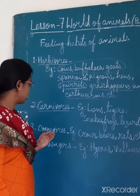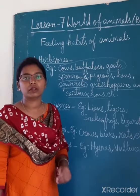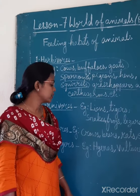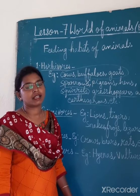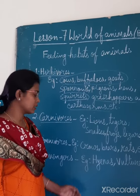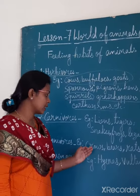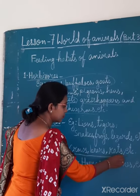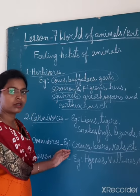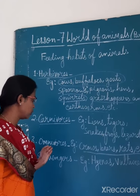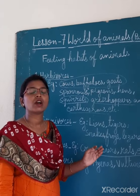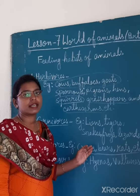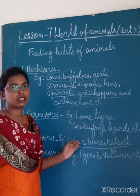Third, omnivorous. What are omnivorous animals? Omnivorous animals are those animals who eat both plants as well as flesh of animals. They are omnivorous animals. Once again, what are omnivorous animals? Omnivorous animals are those animals who eat both plants as well as the flesh of other animals.